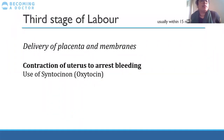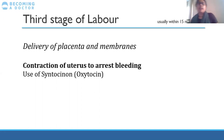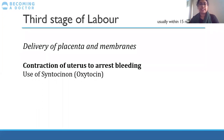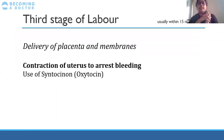The third stage of labor is delivery of the placenta and membranes, usually occurring within 15 minutes. If it hasn't happened within one to two hours, intervention is needed. Women can deliver the placenta themselves, or with controlled cord traction — gentle sustained pressure on the cord with a hand on the uterus to bring the placenta out. The uterus should then contract down to stop bleeding. If it doesn't, syntocinon is used either prophylactically or for active bleeding to contract the uterus.